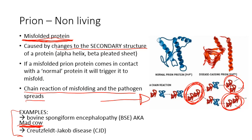Take-home message for prions: they are misfolded proteins. They become contagious because if one misfolded protein interacts with the normal version of that protein, it can automatically trigger a chain reaction and cause it to misfold through chemical interaction. Importantly, because these misfolded proteins were produced by a person's body, there is no way for the human body to detect them as being foreign or a pathogen. The body recognizes them as just a regular protein and therefore doesn't try to stop this protein from causing more damage or misfolding more proteins.